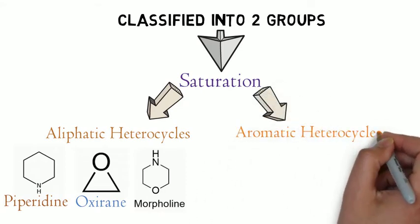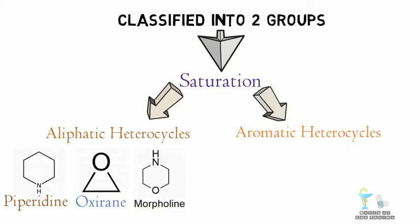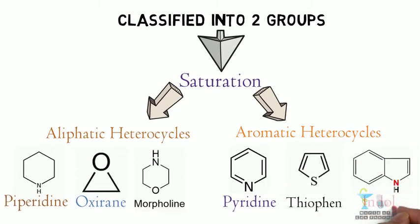The other is aromatic heterocycles. They are pyridine, thiophene, indole, and so on.